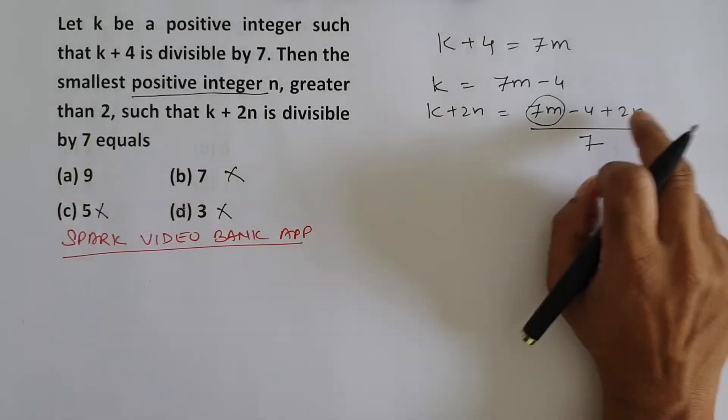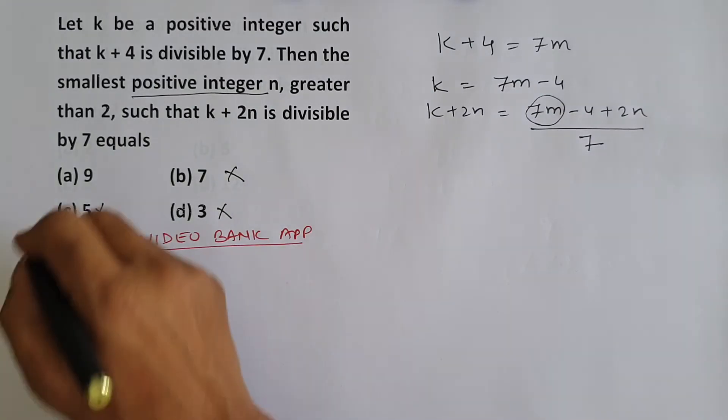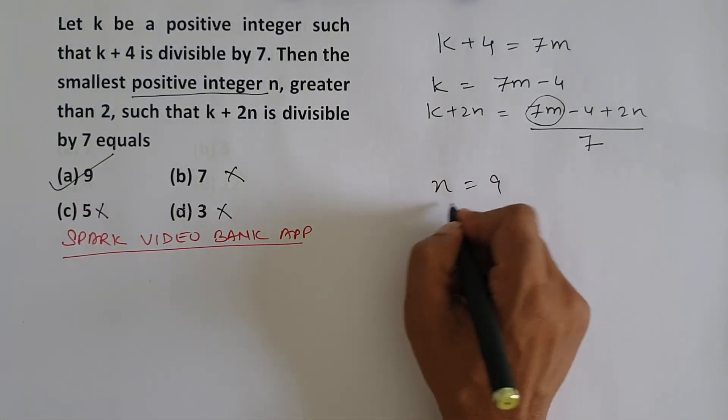9. Still, let's check. 9 times 2 is 18 minus 4 is 14. 7 times 2 is 14. It will be divisible. That means what will our answer be? 9. Which means n is equal to 9.